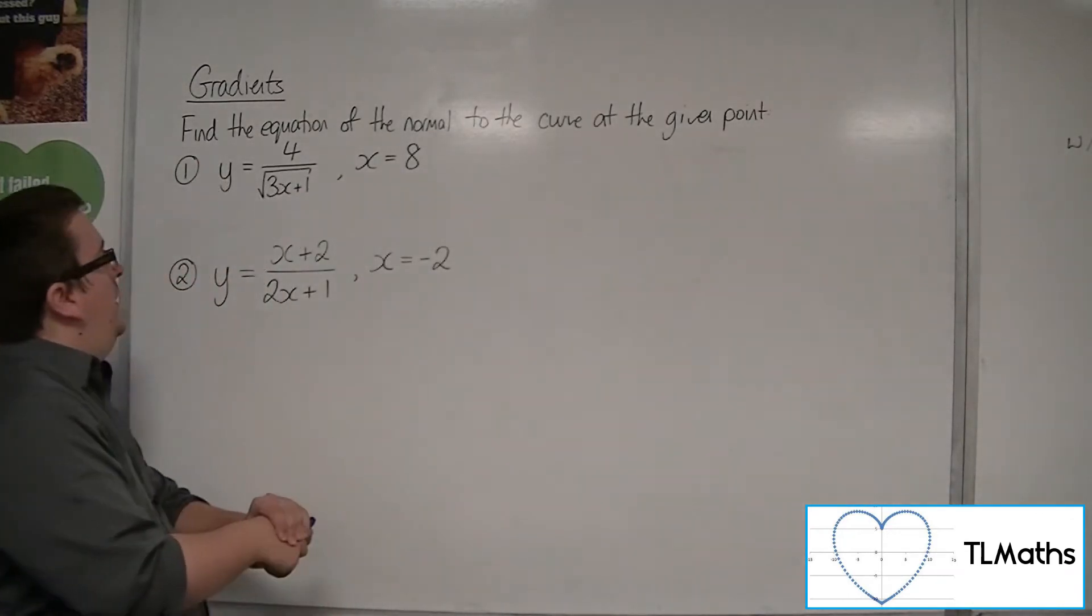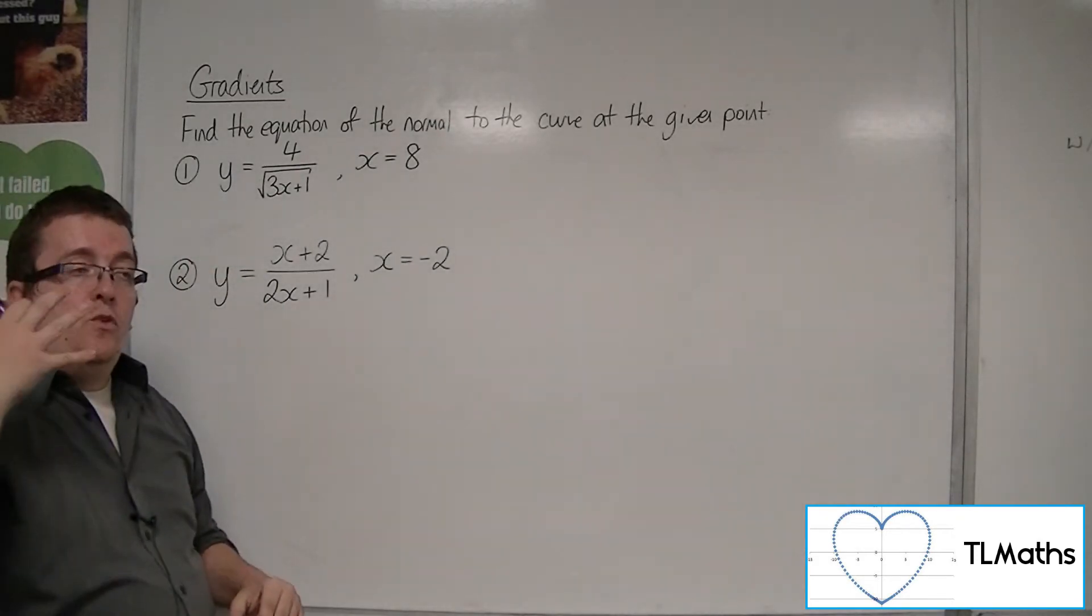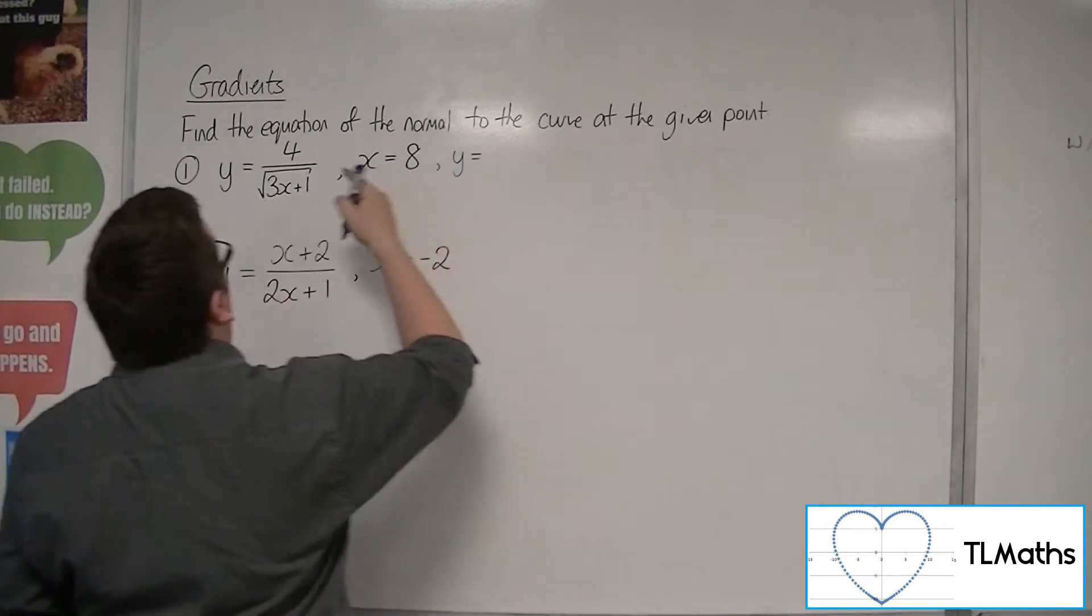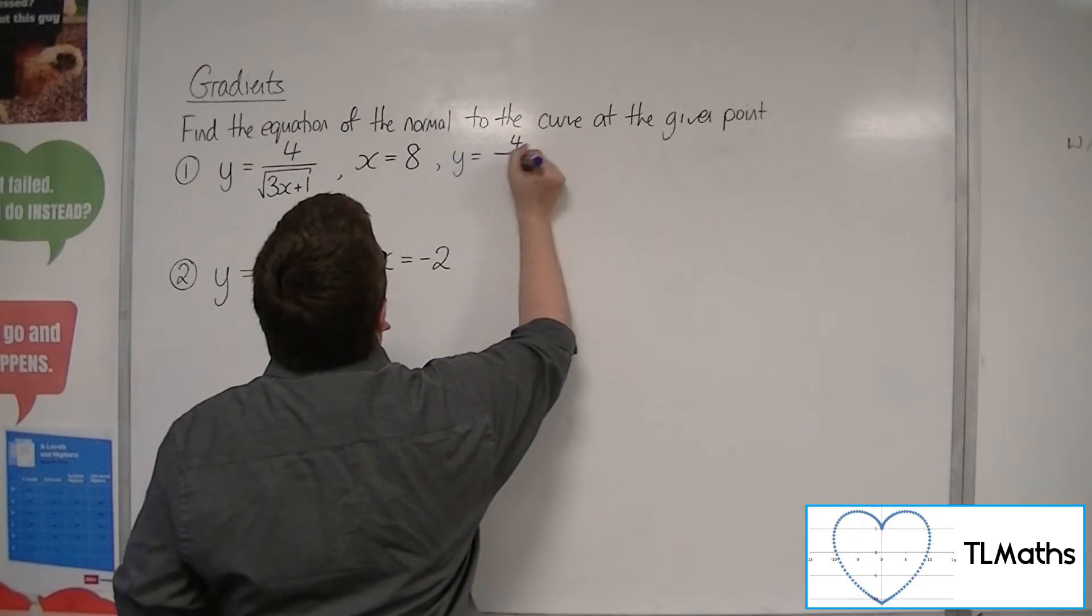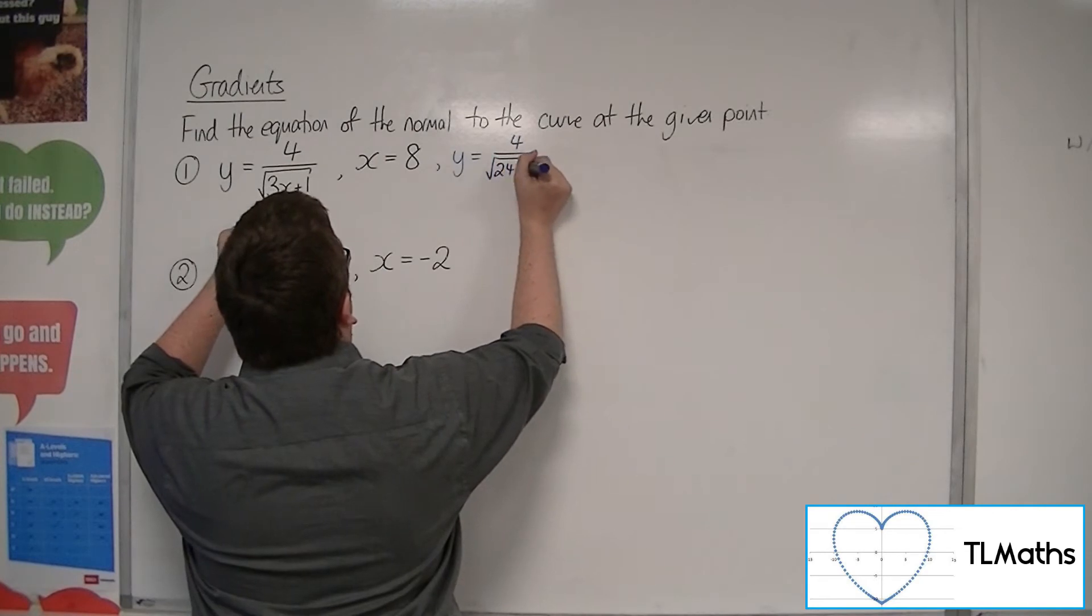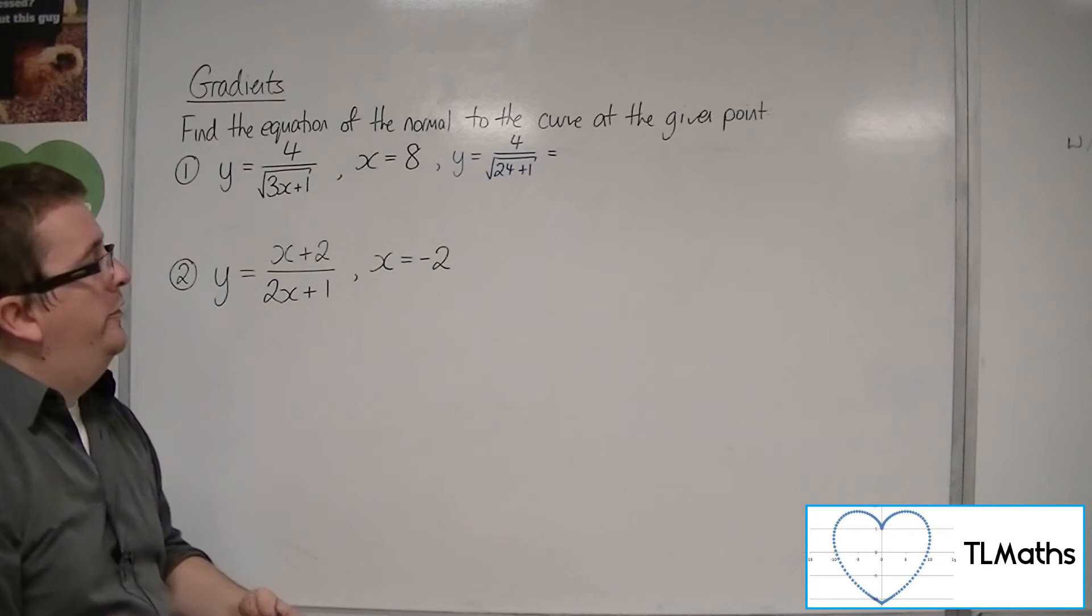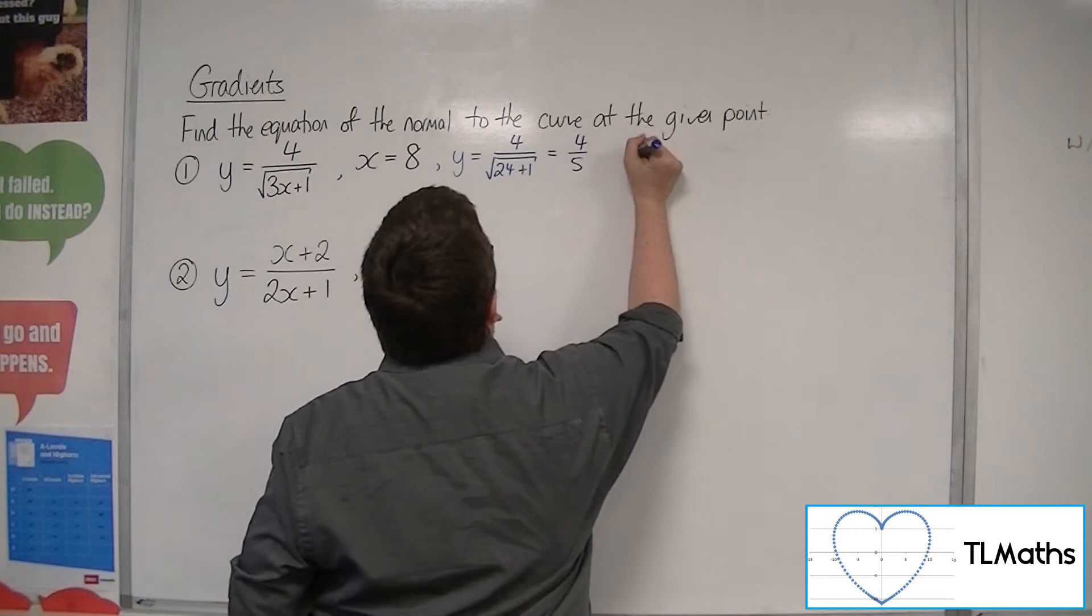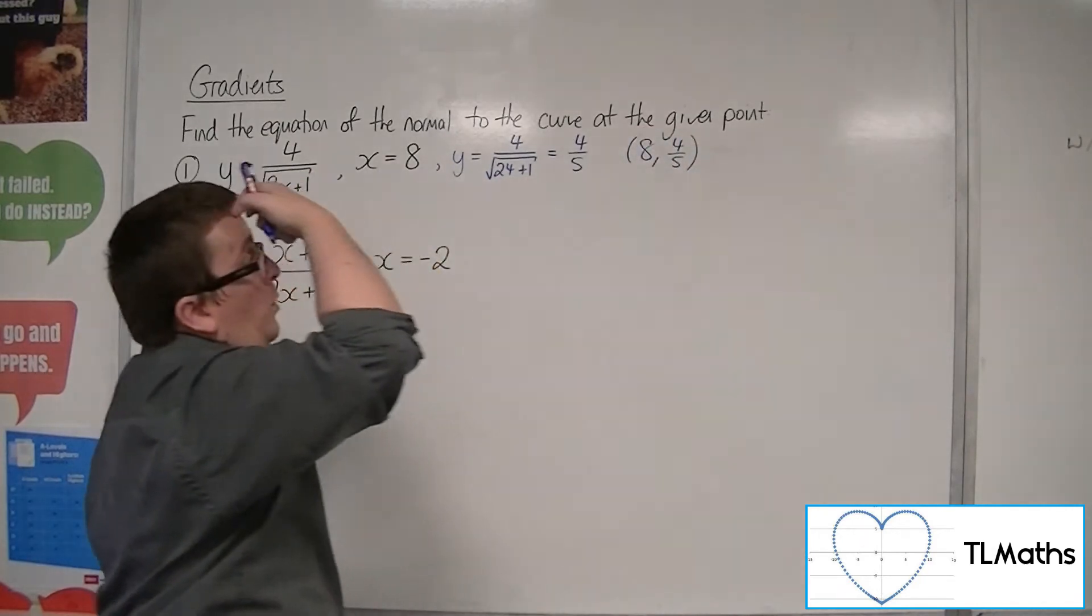So number one, first of all, we want to figure out the y-coordinate for each of these. So y is equal to, well, substituting in 8, we're going to get 4 over the square root of 3 lots of 8, so 24 plus 1. So what's that? 24 plus 1 is 25, square root of 25 is 5, so we get 4 fifths. So (8, 4/5) are the coordinates I'm going to use.